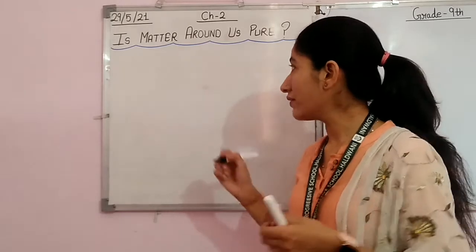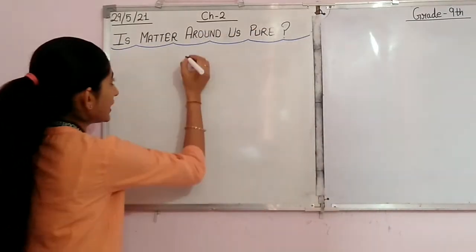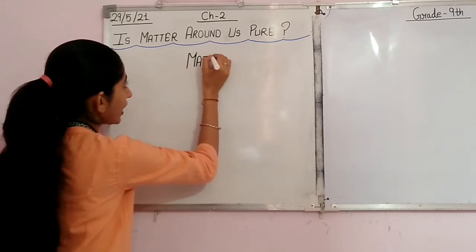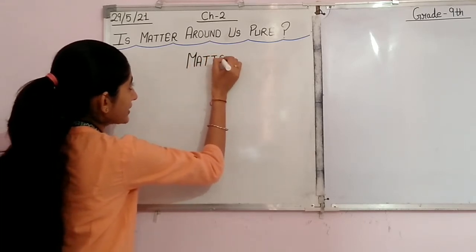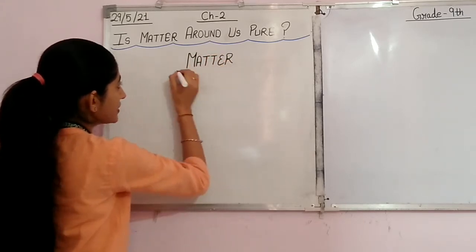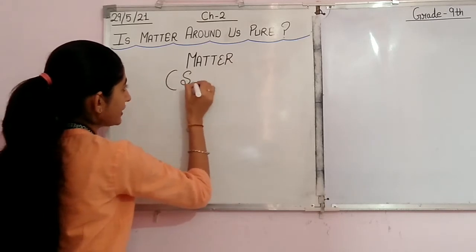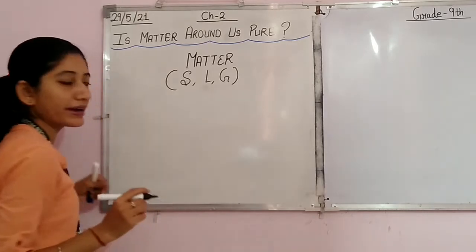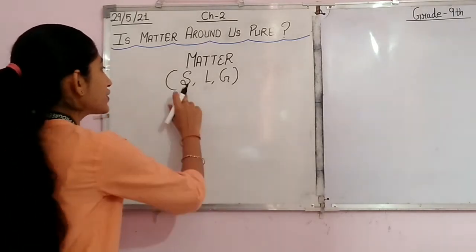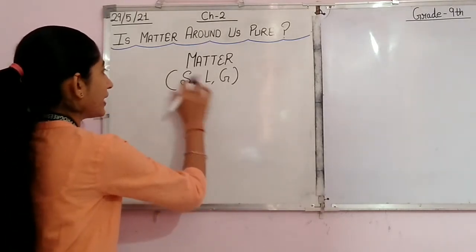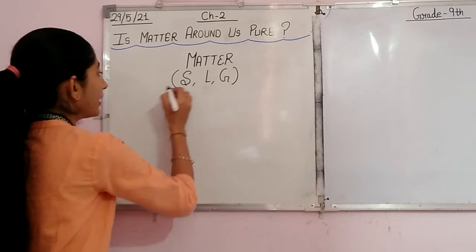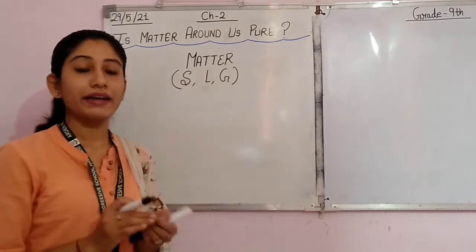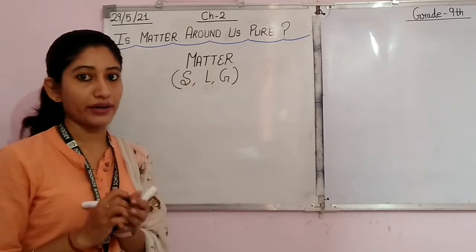Students, when we say matter, we see that matter exists in three forms. What are these? Solid, liquid and gas. This you all know — that matter exists in three forms: solid, liquid and gas. Now, how will we come to know that the given matter is pure or not?